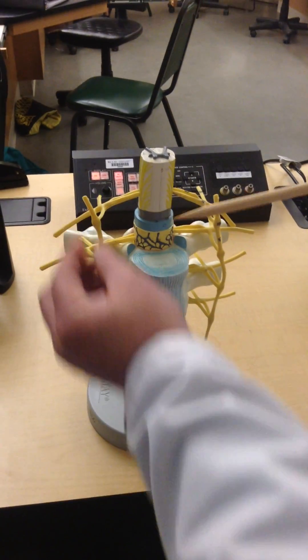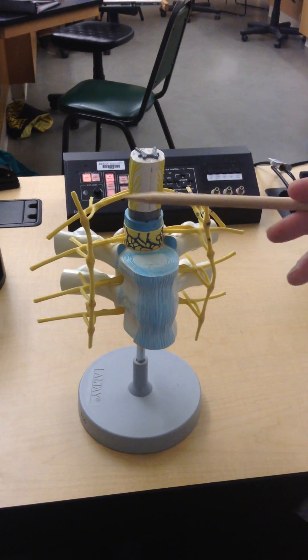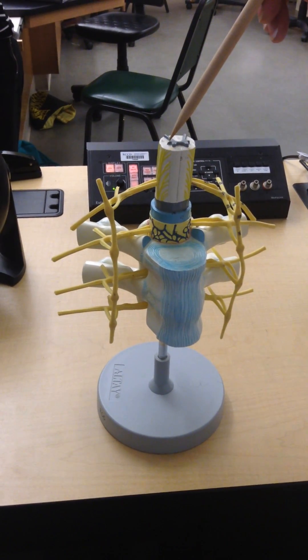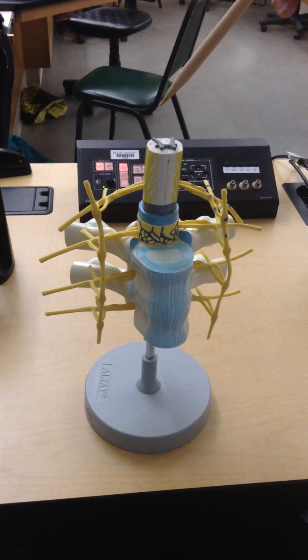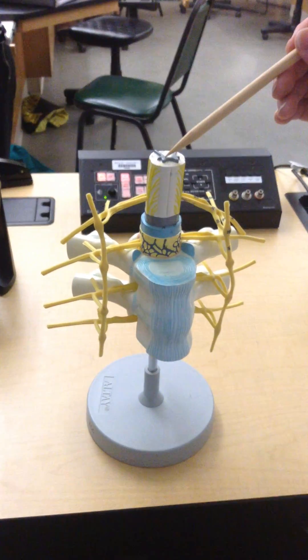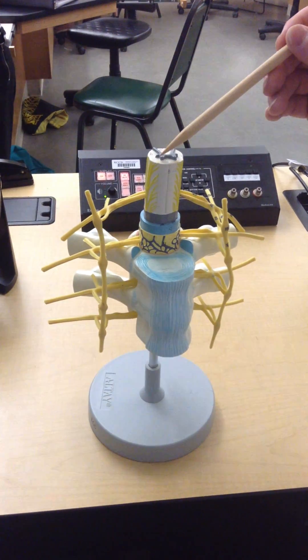and these would be the gray and white rami communicantes. So as we exit the spinal cord, first of all, the neurons that are exiting are motor neurons, multipolar motor neurons, but they're not alpha motor neurons like we saw in the ventral horn going to skeletal muscle.